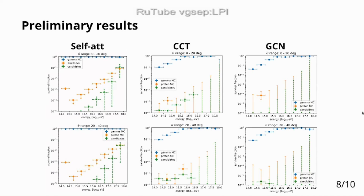Preliminary results look very promising. All models show good performance in the high-energy spectrum. One issue is a lack of Monte Carlo background data, making it difficult to carefully estimate the background suppression rate, since the amount of simulated data is not high enough. The models essentially filter out all the background we have, so we cannot measure this precisely.